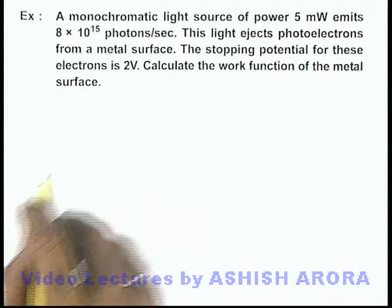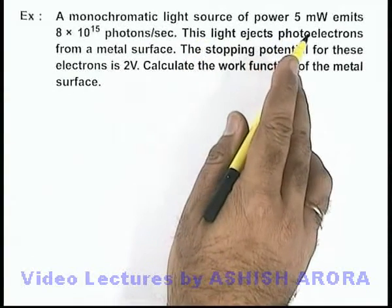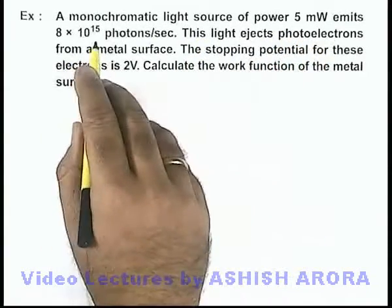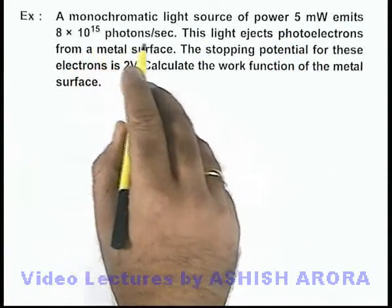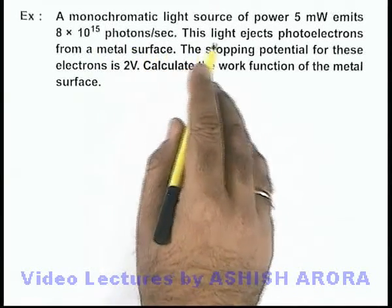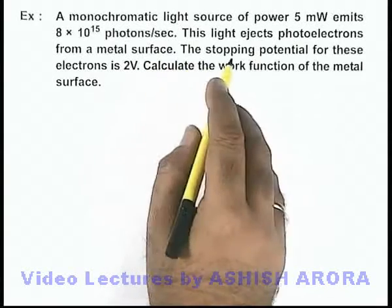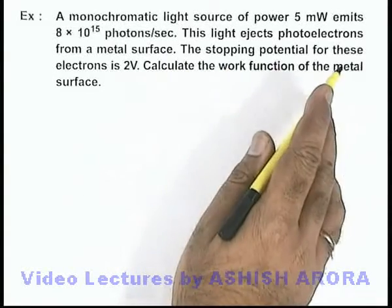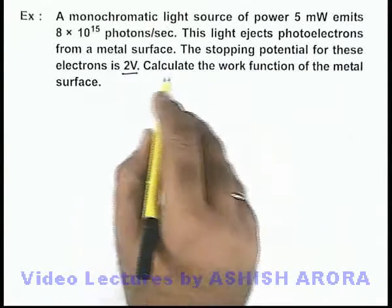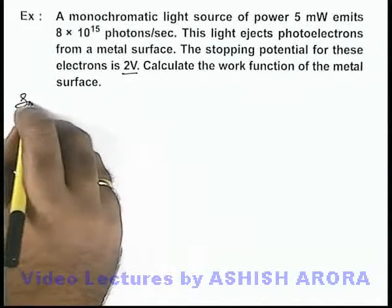In this example, we are given that a monochromatic light source of power 5 milliwatt emits 8 × 10¹⁵ photons per second. This light ejects photoelectrons from a metal surface, and the stopping potential for these electrons is 2 volt. We are required to calculate the work function of this metal surface.